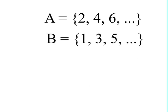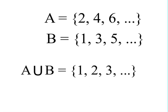Here's another pair of sets of numbers. Set A is even counting numbers; set B is odd counting numbers. When you take the union of those two sets and put them together, you get all of the counting numbers.